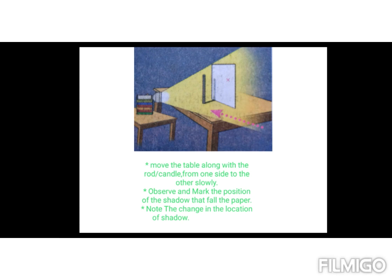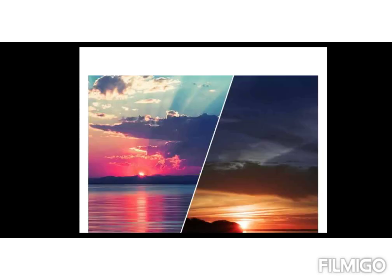From this activity, we realize that as the position of the table changes, the position of the shadow also changes. If the position of the sunrise and sunset on the horizon are observed for the whole year, you will realize that they keep on changing.